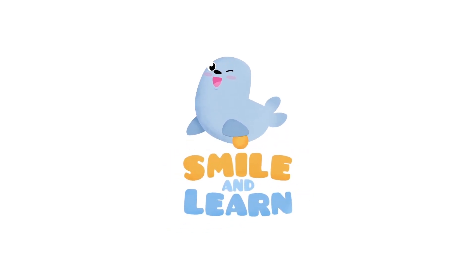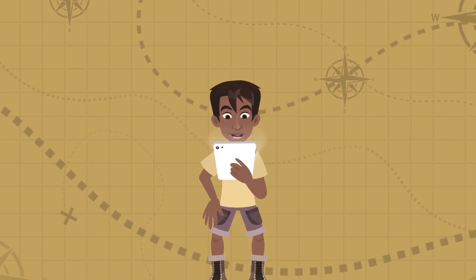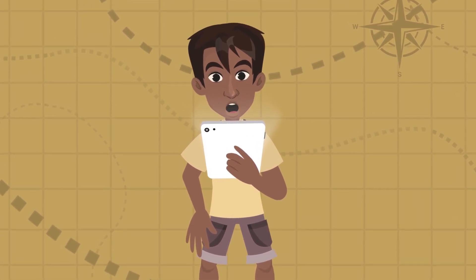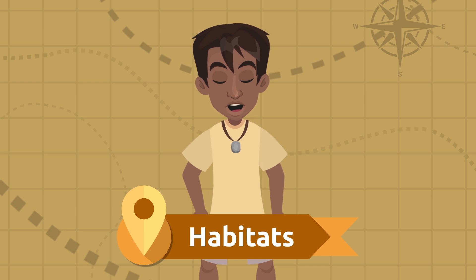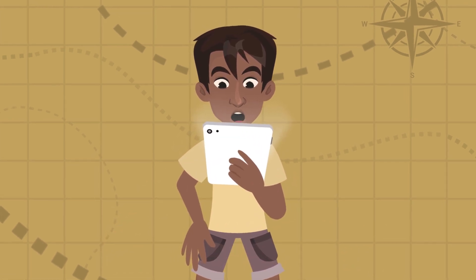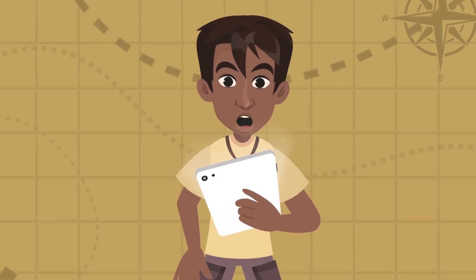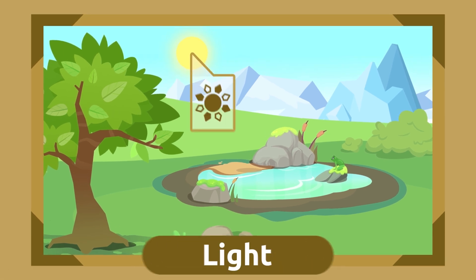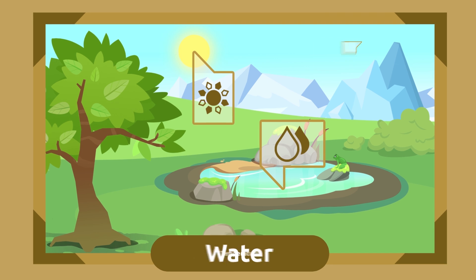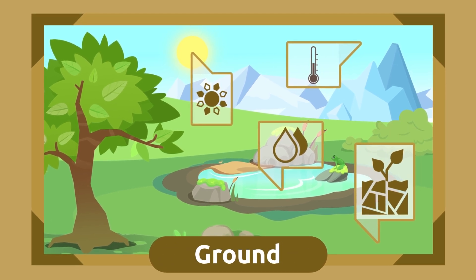Hello friends! Today we're going to discover other places where living beings live. These places are known as habitats. We call a habitat a place that has the necessary resources so that living beings can survive. These resources are the light, the water, the temperature, the ground, and the oxygen.